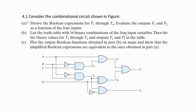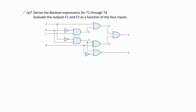Hello friends. In this video we will discuss about the given problem. Consider the combinational circuit shown in the figure. Now let us solve the first part: derive the boolean expressions for t1 through t4, and evaluate the outputs f1 and f2 as a function of the four inputs.